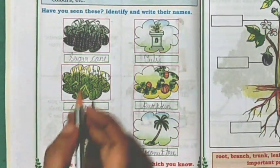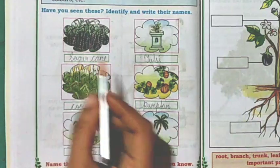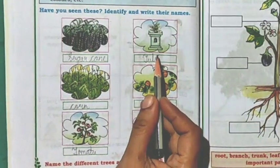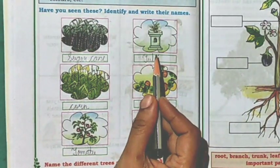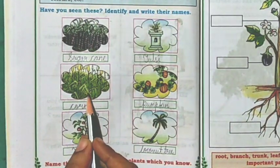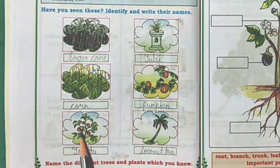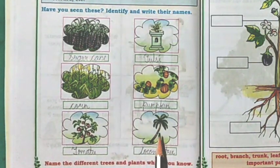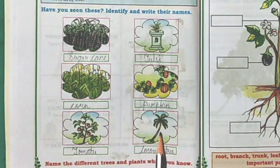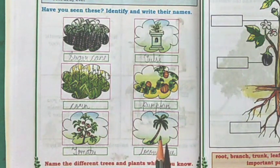We get sugar from sugarcane, and tulsi is a medicinal plant. Corn, pumpkin, tomato, and coconut we use for food. We also get coconut oil from coconut.